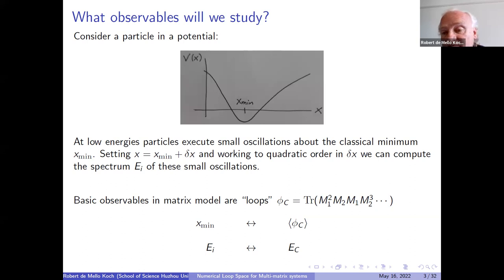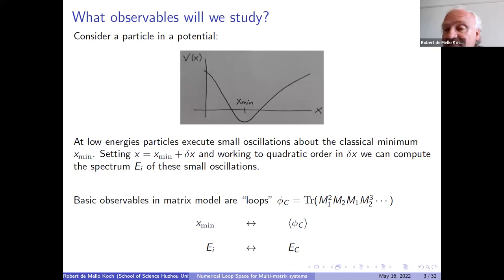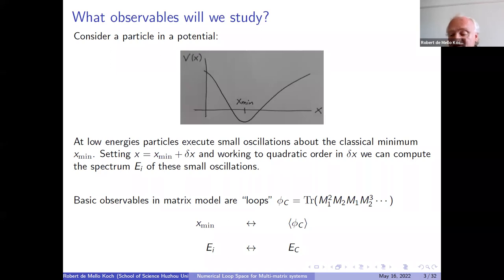In the matrix model, the basic observables, the gauge invariant quantities I want to look at, are single traces of an arbitrary product of M1s and M2s. The analog of X_min, the classical stationary point, would be the expectation value of this loop C. I'm interested in the expectation value calculated in the planar limit, so you sum only planar diagrams. This amounts to the assumption that the number of matrices inside the trace is very much less than capital N as we take N to infinity. And I'd like to calculate the frequencies, the spectrum of those small fluctuations.